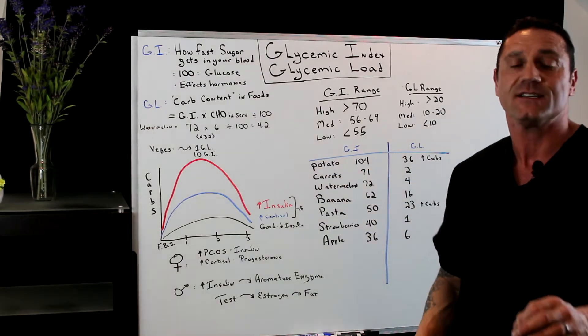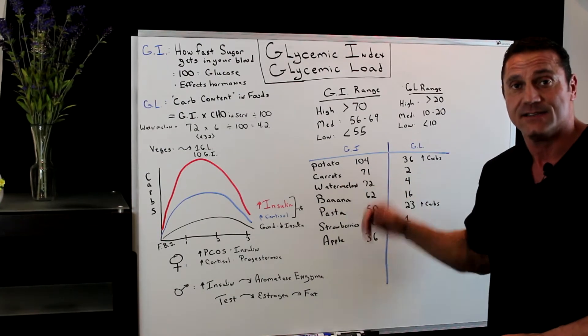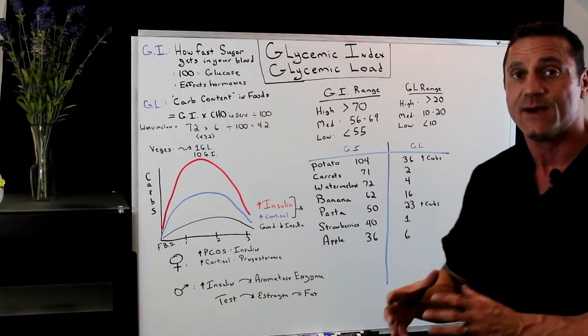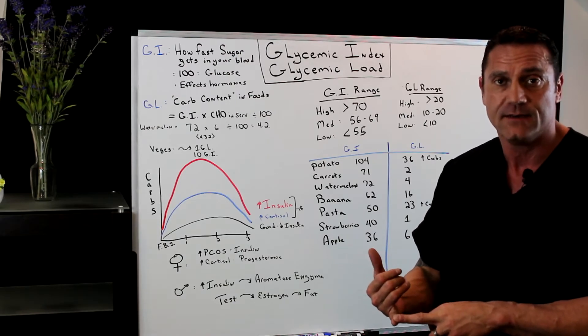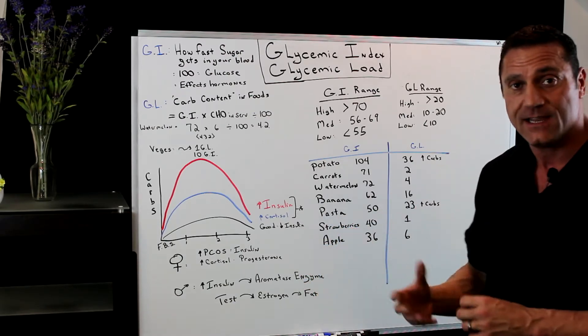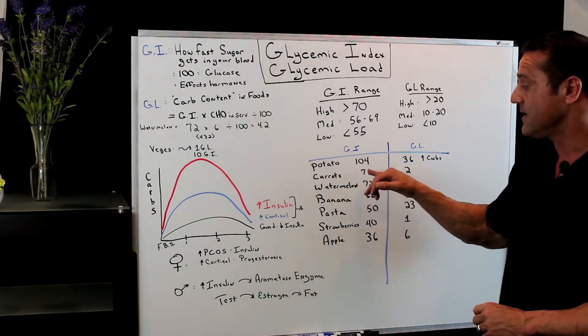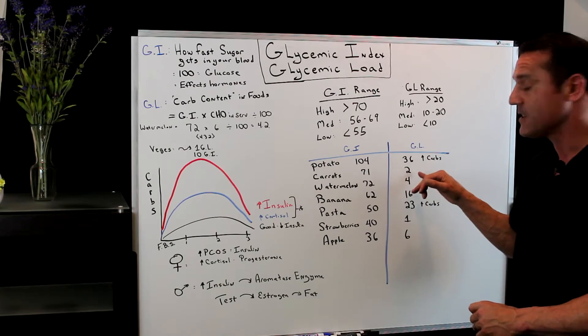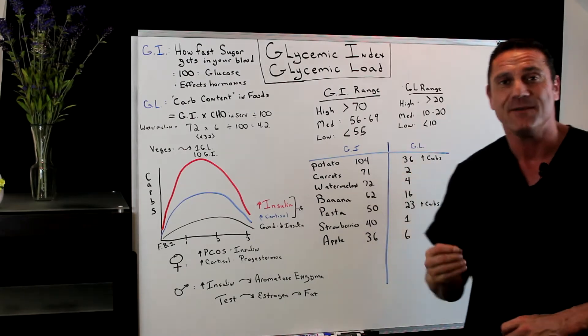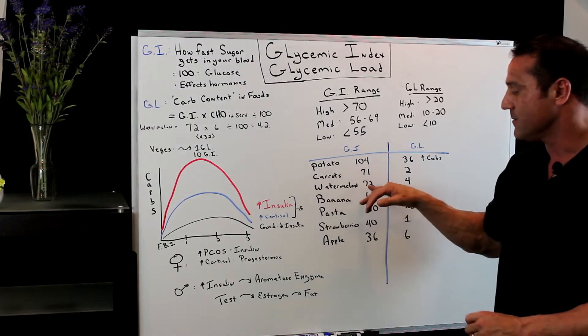Carrots. Believe it or not, carrots, I was shocked too. Carrots are very sugary. It's 71 glycemic index. This is why people who are trying to lose weight, diabetics, insulin resistant, fatty liver, carrots are not good because it's a lot of sugar. It has 71 glycemic index. Glycemic load is two. There's not that much of a quality carb in a carrot. Then it goes to watermelon.